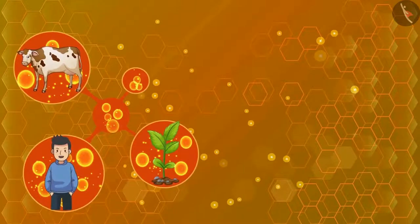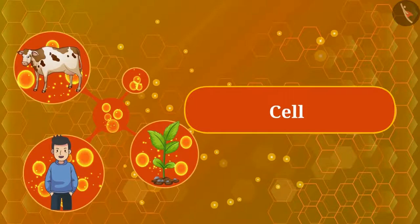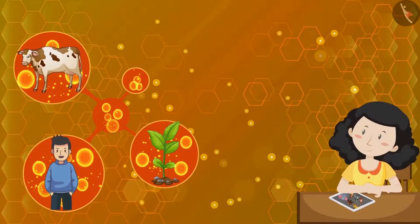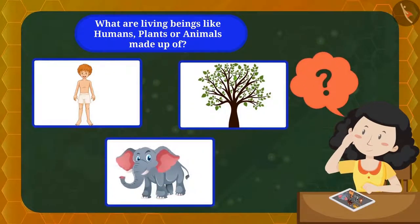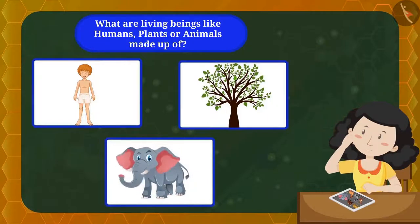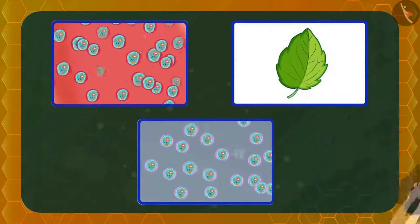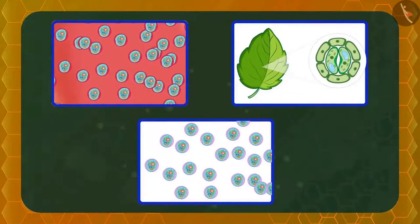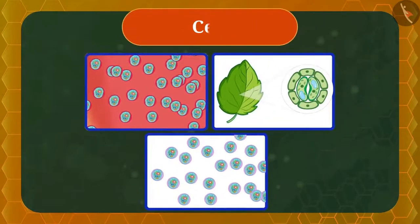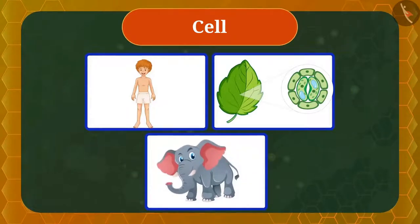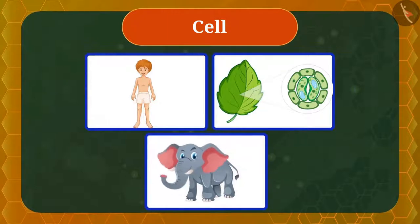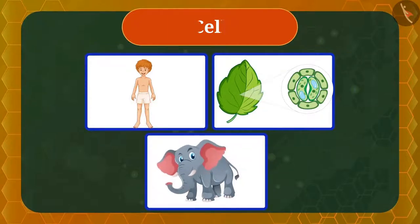Hello everyone, welcome back! Today in this video we will learn about cells. Have you ever thought what living beings like humans, plants, or animals are made up of? Well, let's see — if we zoom into all these living creatures, you can see small compartments. These compartments are called cells. Hence, it can be said all living beings are made up of cells, and the cell is the smallest unit from which all living beings are made.